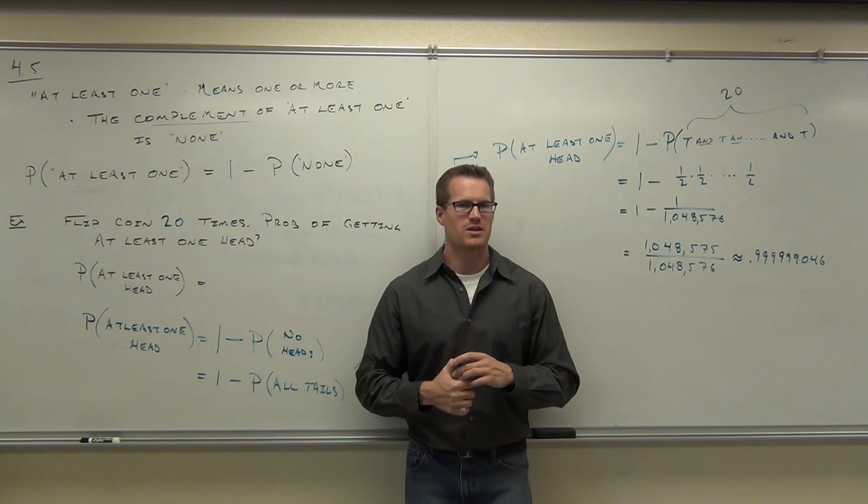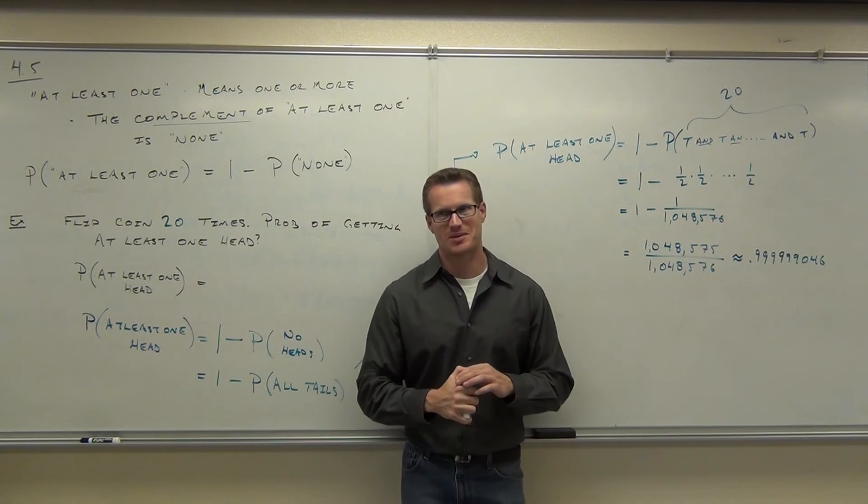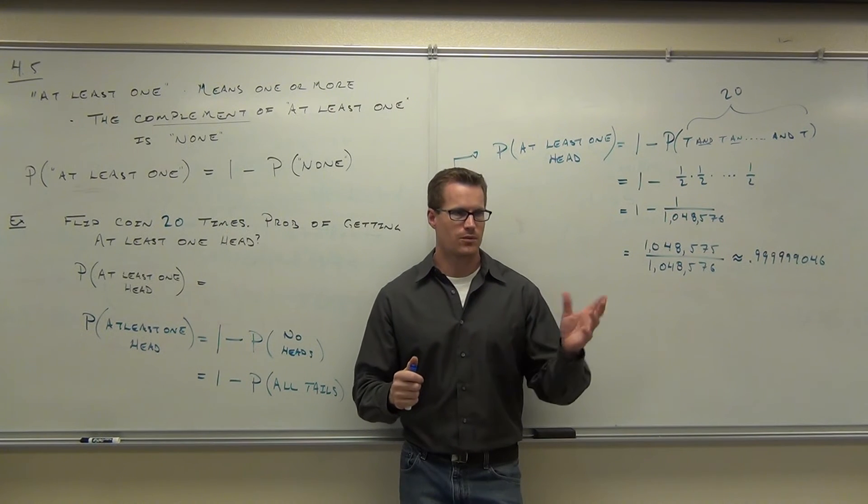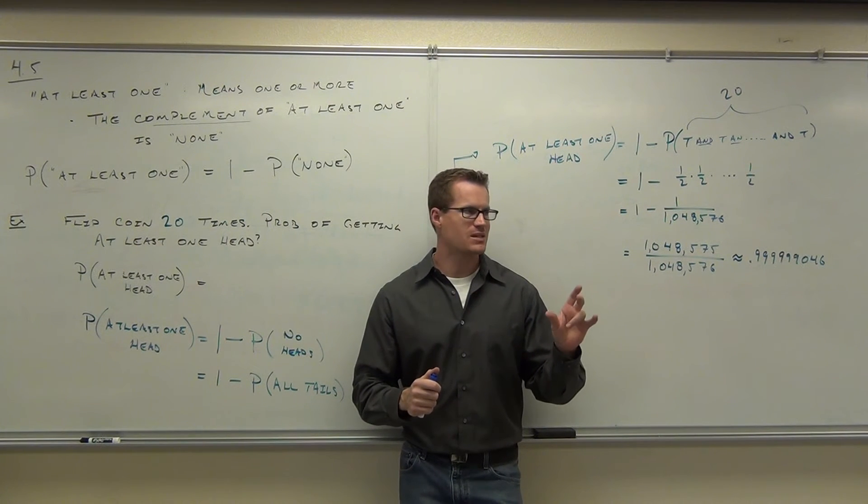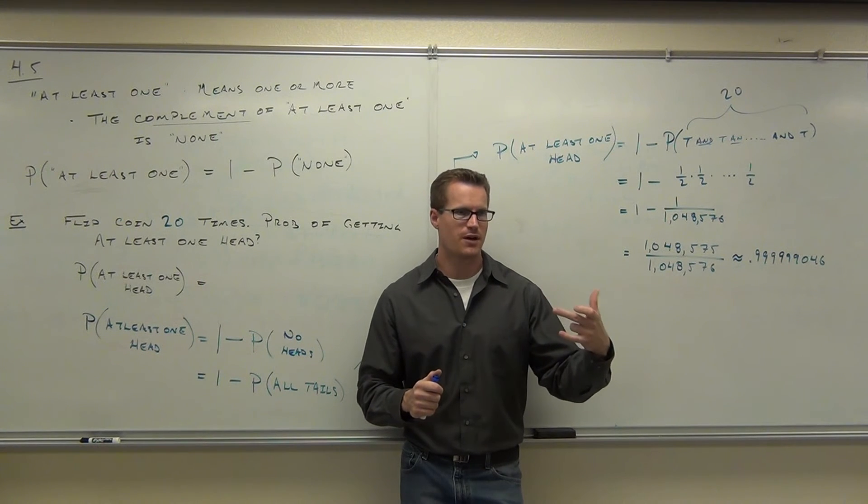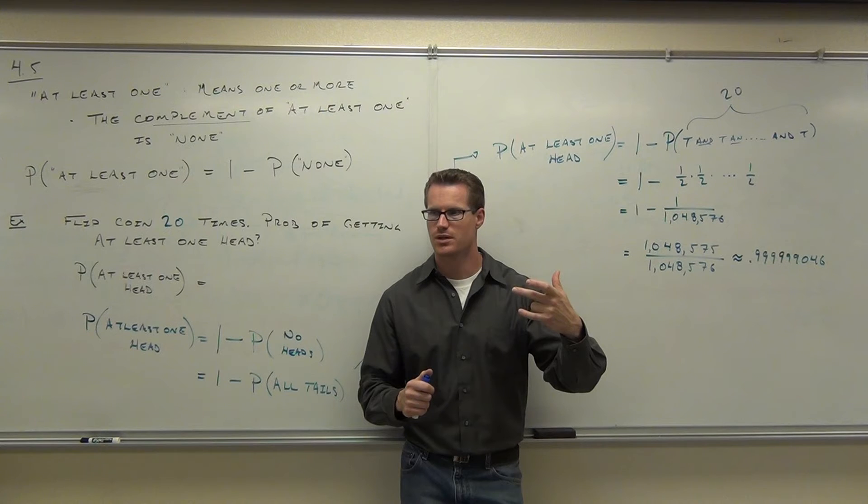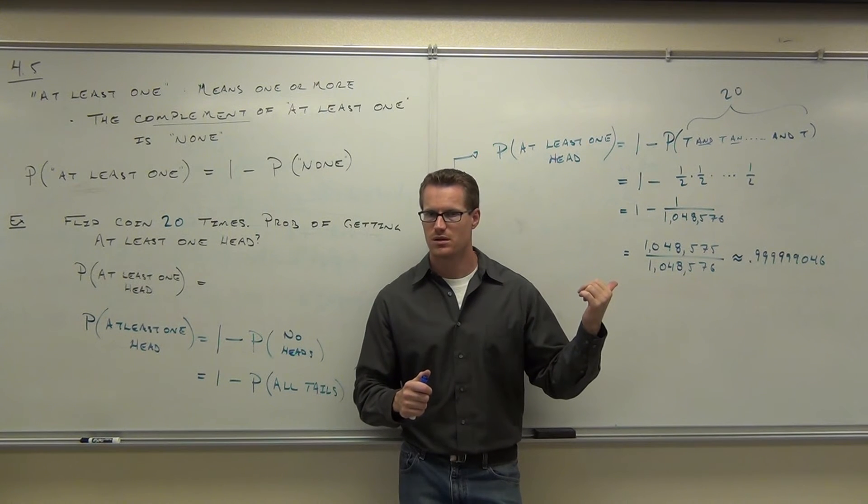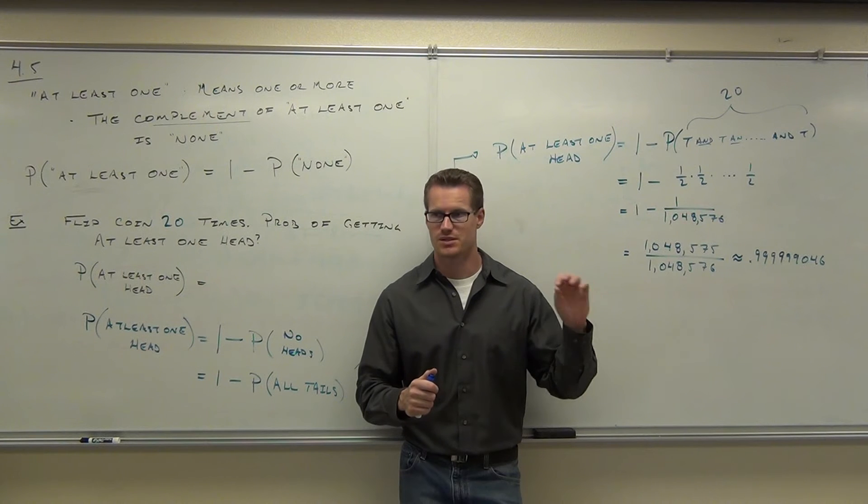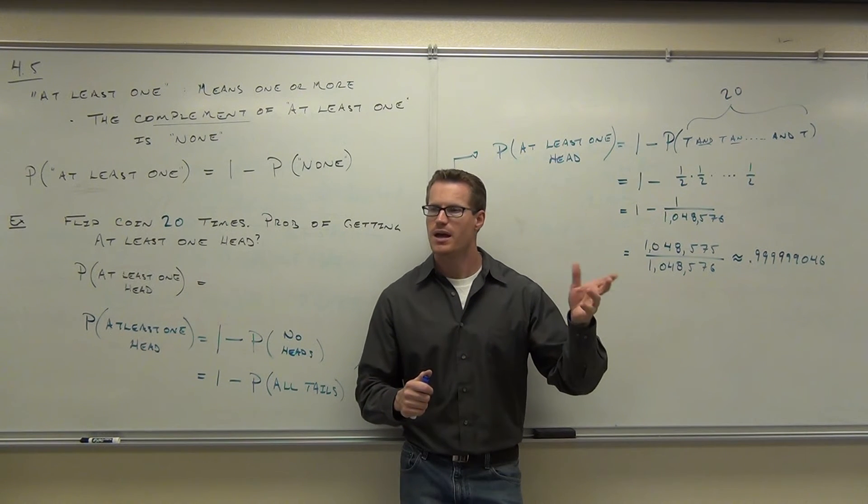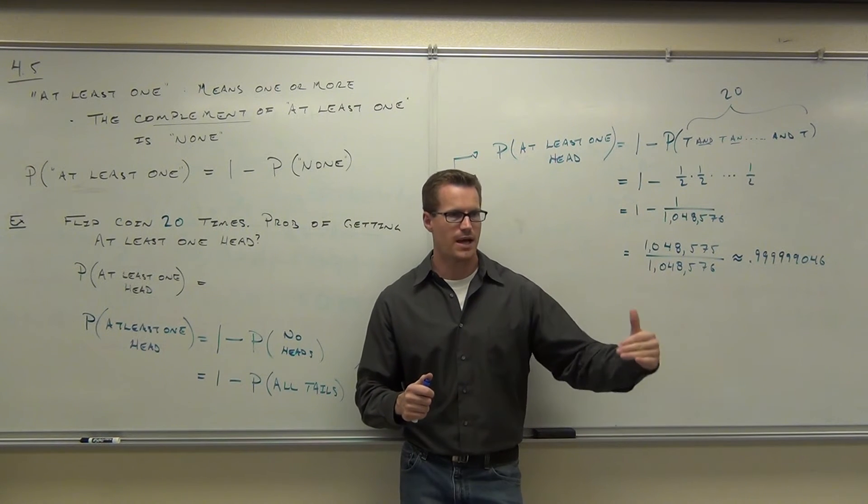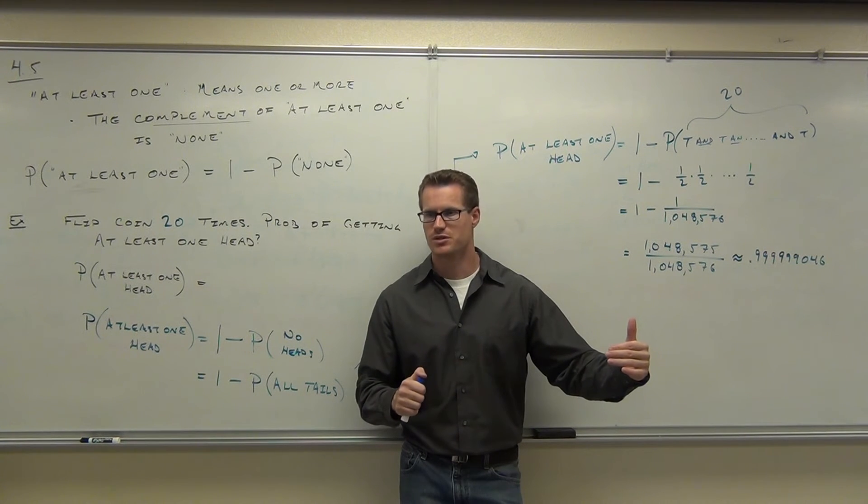Now, one more thing to point out to you, if you did not read this in your book, which you're supposed to read this in your book, rare and usual for probabilities. If you have less than a .05 percent chance, that would be called a rare occurrence. So, is this rare? Well, it's pretty darn usual that you're going to get at least one head. I mean, this is almost a hundred percent chance you're going to get that. If your probability was .05 or less, then the probability would be considered unusual.